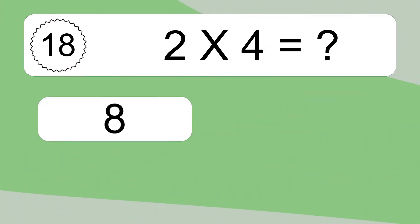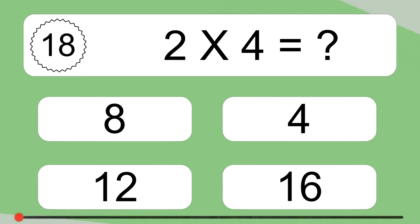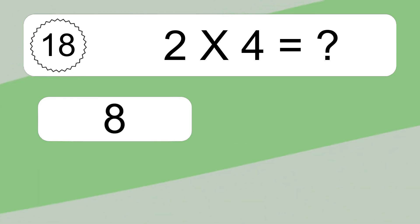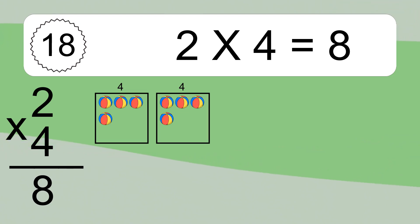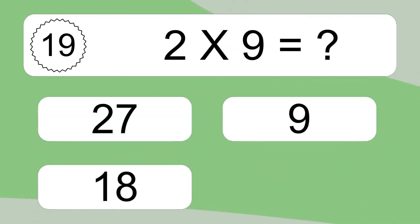2 times 4 equals what? 2 times 4 equals 8. We have 2 boxes and each box has 4 colorful balls inside. If you count all the balls in all the boxes together, you will have 2 times 4 balls. This equals 8 balls.